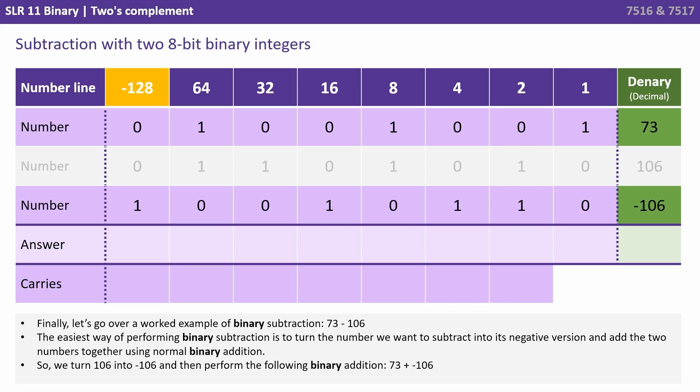We can now ignore that middle line. We don't need that now. Now we can perform standard addition like we taught you in the previous video. We're just going to add the two numbers on the screen together. 1 plus 0 is 1. 0 and 1 is 1. 0 and 1 is 1. 0 and 0 is 0. 1 and 0 is 1. 0 and 0 is 0. 1 and 0 is 1. 0 and 1 is 1.